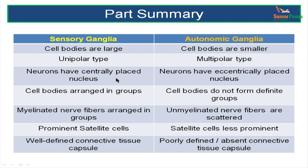Let us summarize differences between sensory ganglia and autonomic ganglia. Sensory ganglia cell bodies are larger and of the unipolar or pseudo-unipolar type, whereas autonomic ganglia cell bodies are smaller and of the multipolar type. In sensory ganglia nuclei are central; in autonomic ganglia nuclei are eccentric. In sensory ganglia cell bodies are arranged in loops or clusters; in autonomic ganglia they are scattered. Sensory ganglia have myelinated nerve fibers in groups; autonomic has unmyelinated fibers scattered. Sensory ganglia cells have prominent satellite cells; autonomic ganglion cells have less prominent satellite cells. Sensory ganglia have a well-defined connective tissue capsule; autonomic ganglia have almost an absent connective tissue capsule.